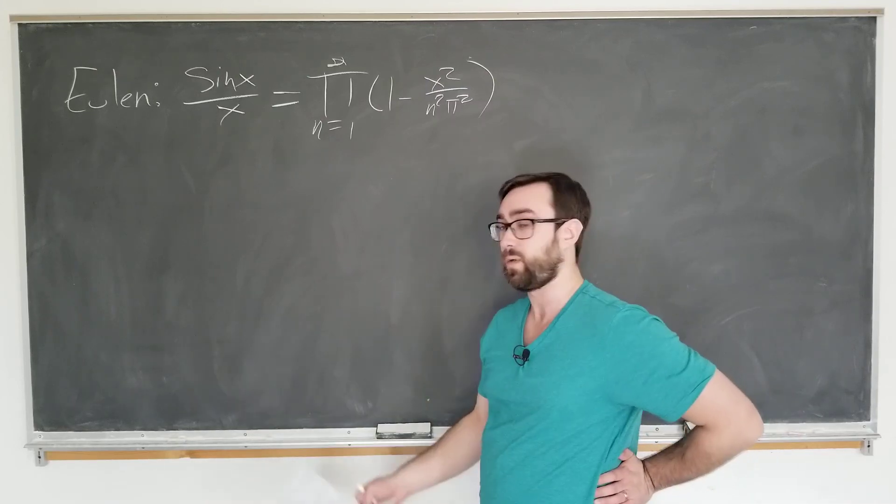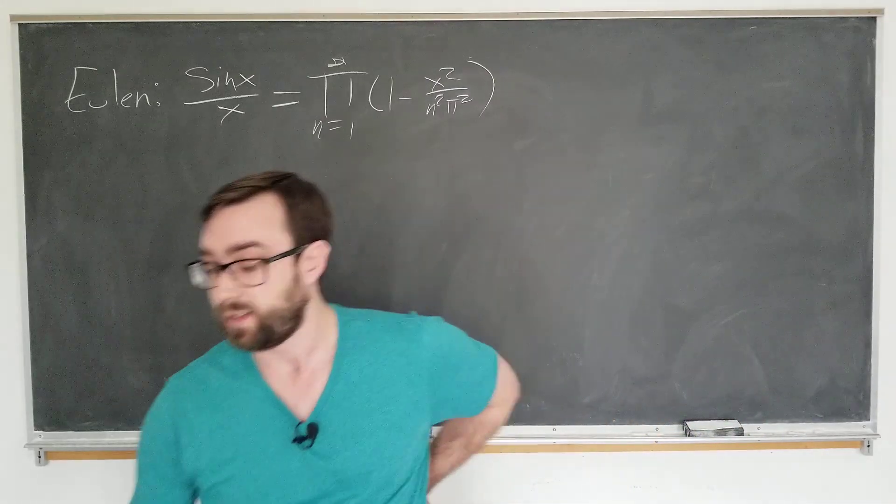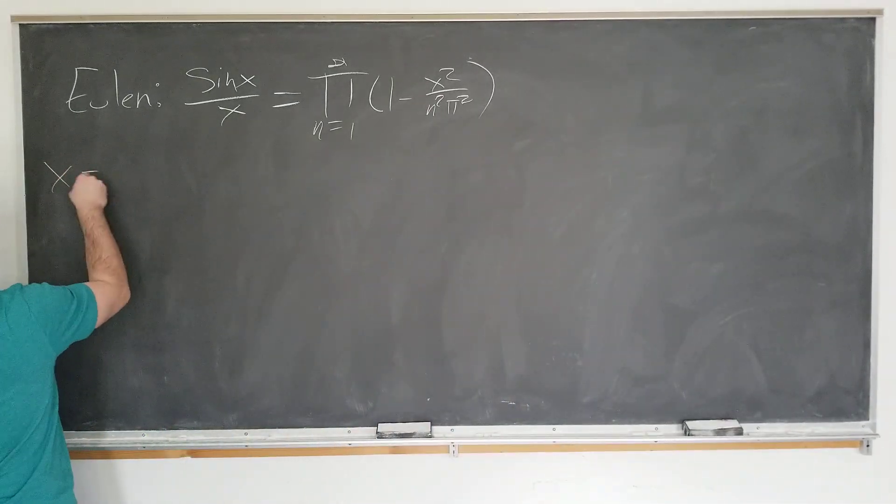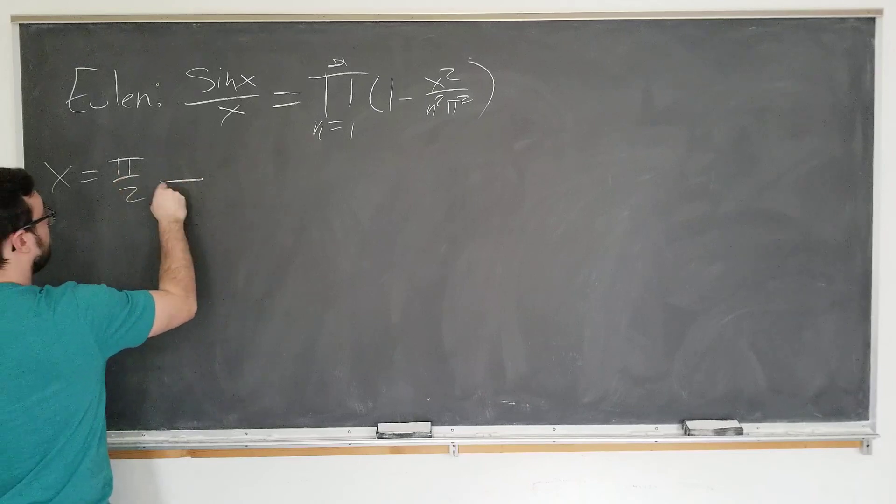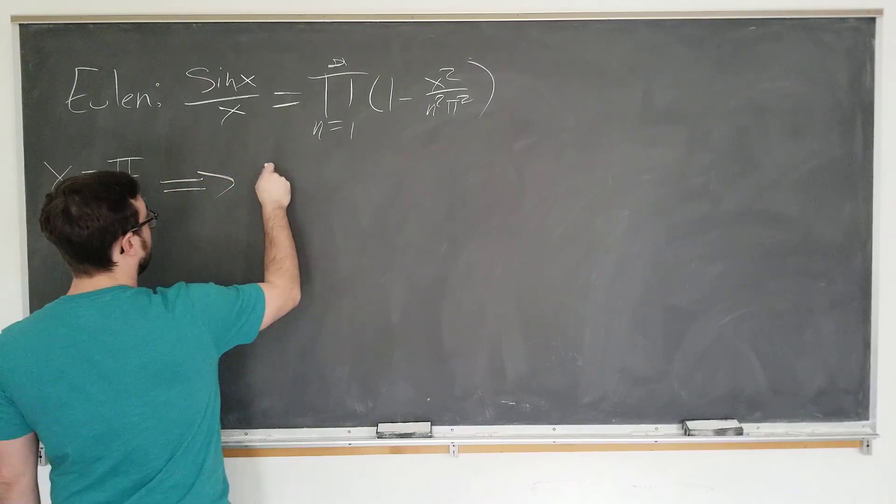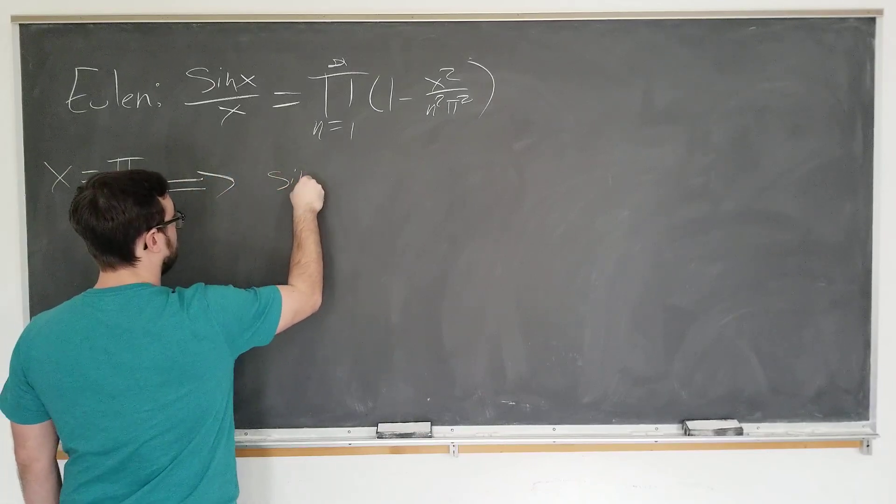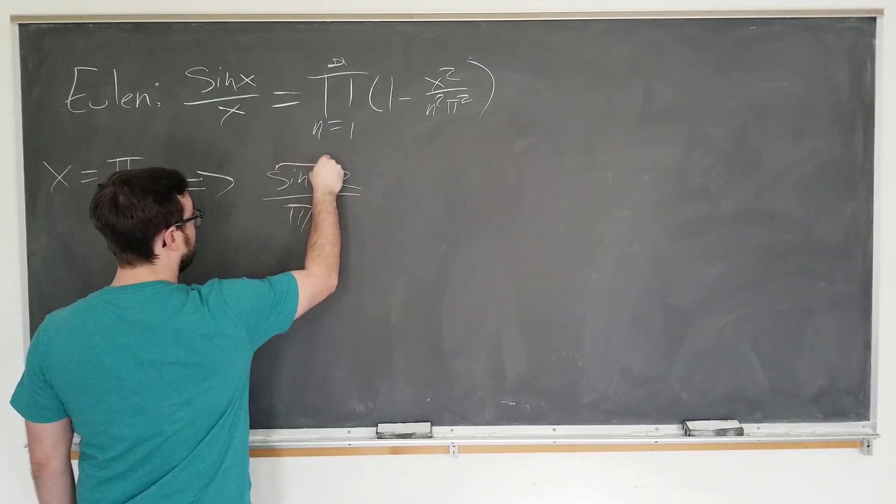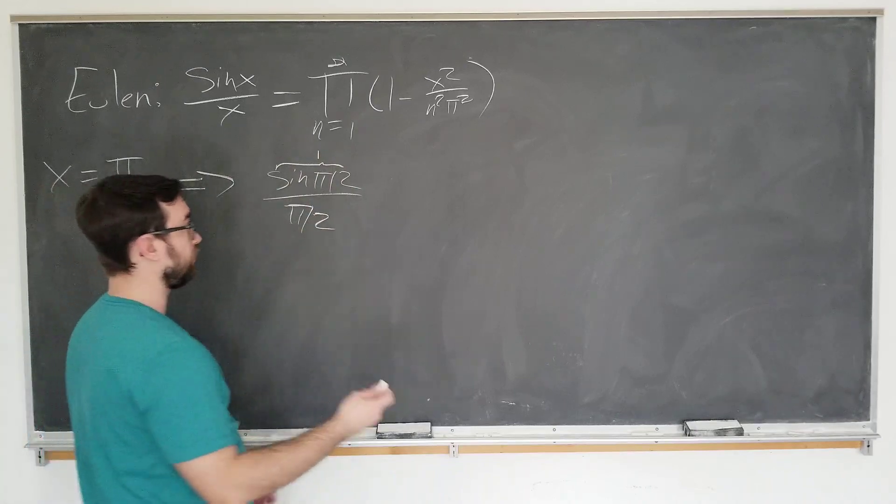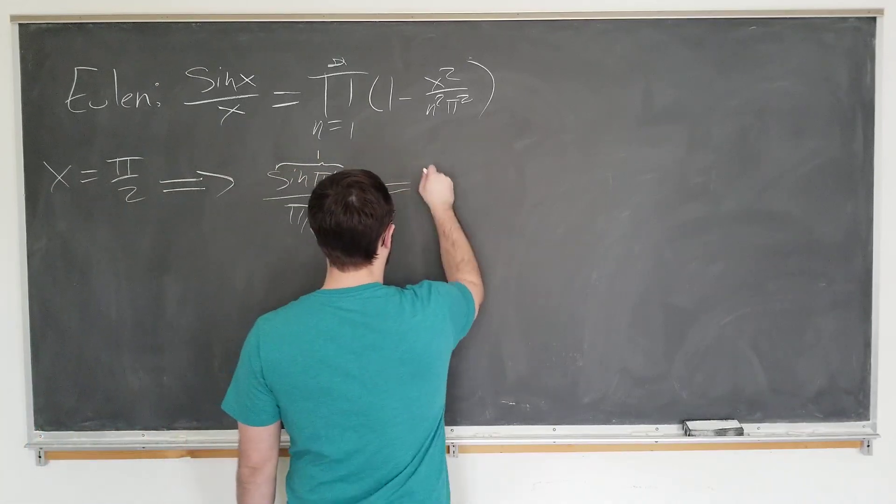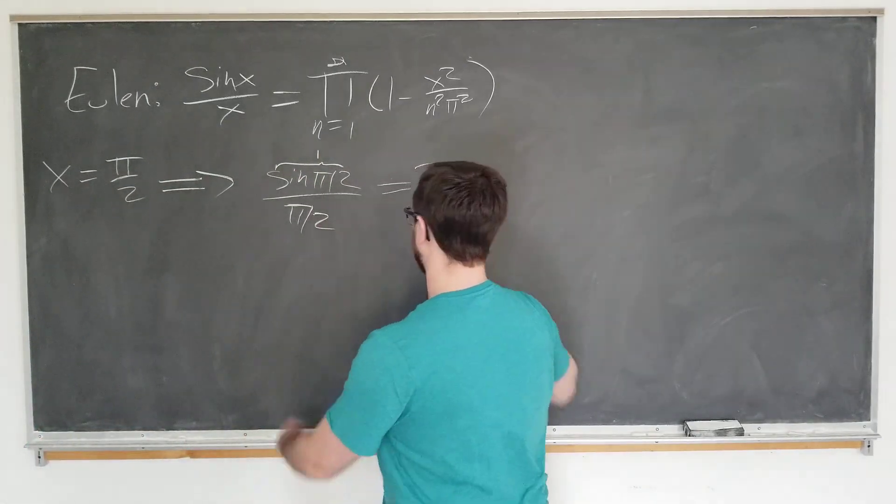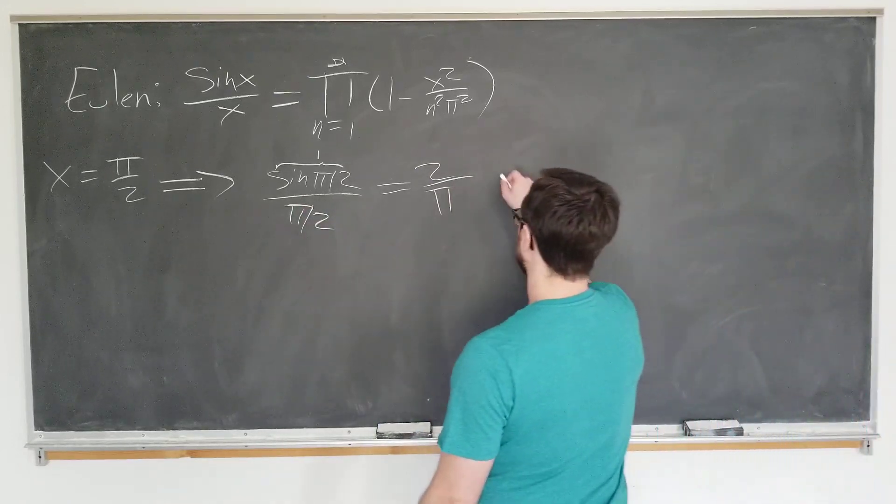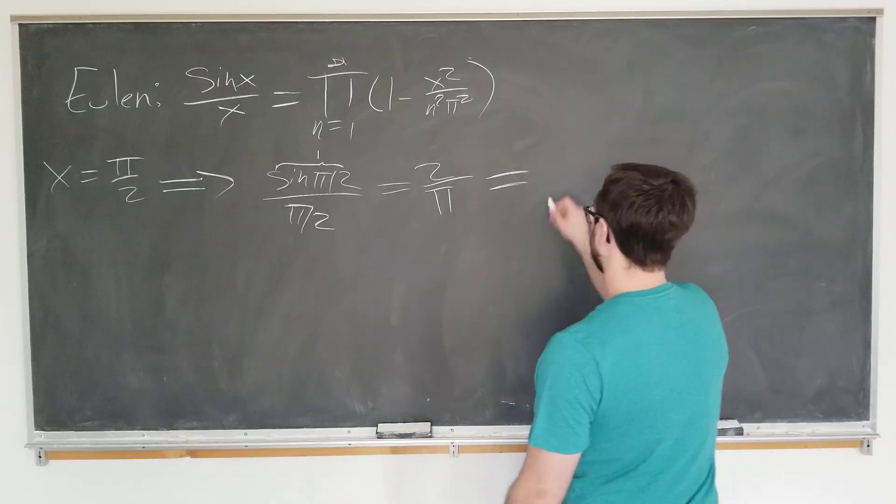So, what Euler invites us to do is plug in x equals pi over 2 to the formula. We do this, then we have sine pi over 2 over pi over 2. Well, we know that sine pi over 2 is just, of course, 1. And we reciprocate pi over 2 to get 2 over pi.